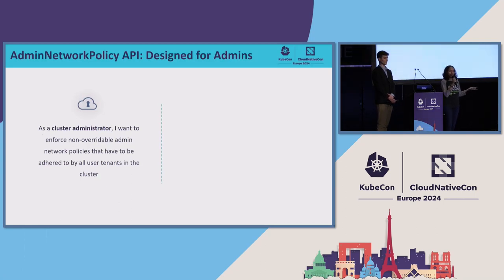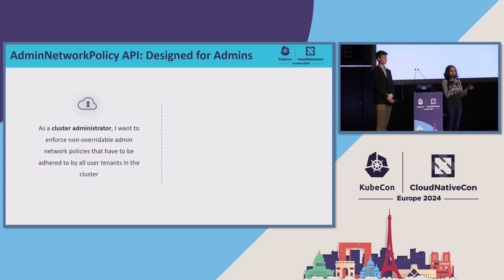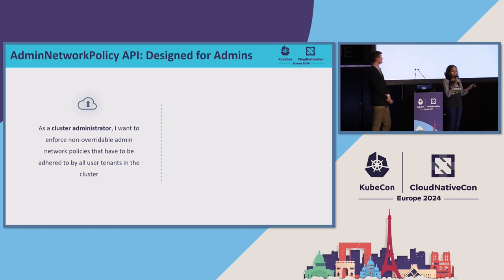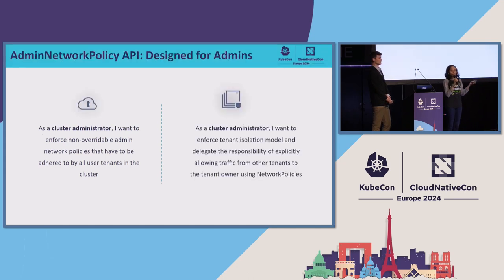Some of the use cases for the admin network policy API: as a cluster administrator, you might want to enforce security for your entire cluster — not just a specific namespace — but have rules that span cross-namespace, multi-tenant scenarios, isolate tenants, and have non-overridable rules that network policies created by developers cannot override. All tenants in your cluster must adhere to this.